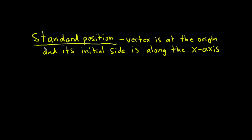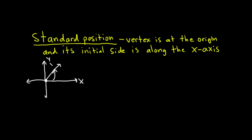Let's do some simple examples so you can see. Here's an example of an angle — here's the initial side along the x-axis and then here's the terminal side. You can draw a y-axis and an x-axis to make it clear that the initial side is along the x-axis, the vertex is at the origin, and this here is the terminal side. This angle has a measure of less than 90 degrees, so it's called acute. Angles whose measure are strictly between 0 and 90 are called acute.